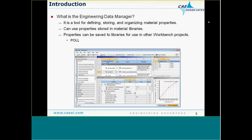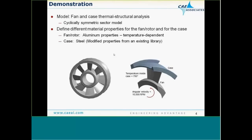Now I want to move on to the demonstration. I'm going to bring up a model of a fan. The fan model contains two parts: the fan portion and the case. I want to assign custom aluminum properties which are temperature dependent to the fan portion of the model. And for the case, I want to import some base properties from an existing library and then modify those properties.